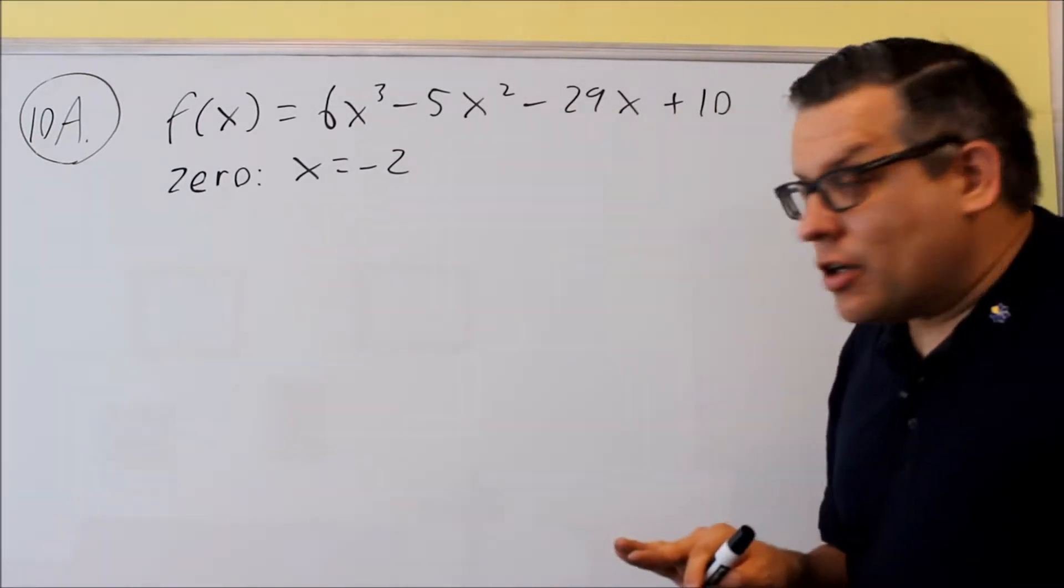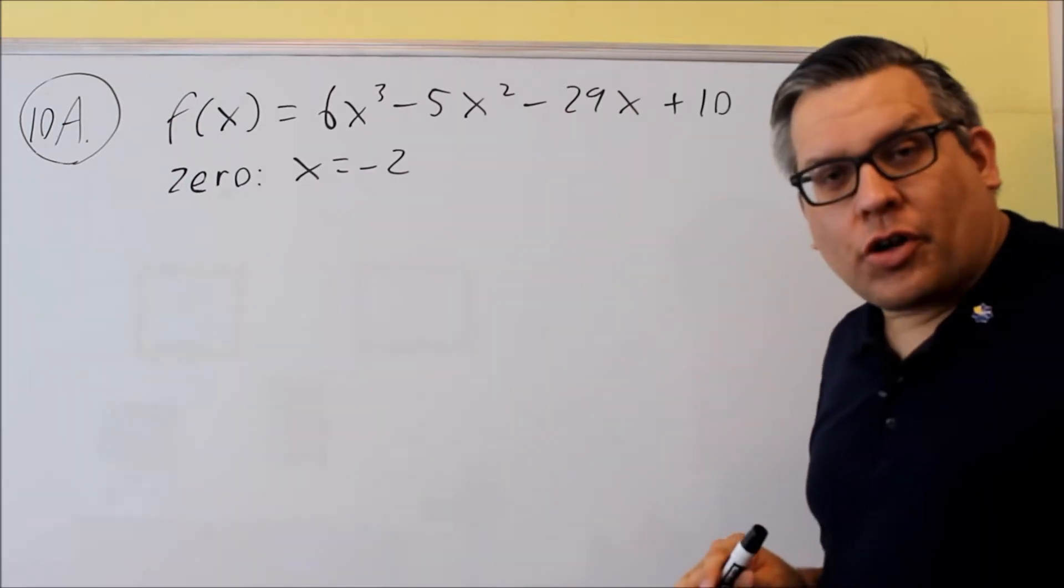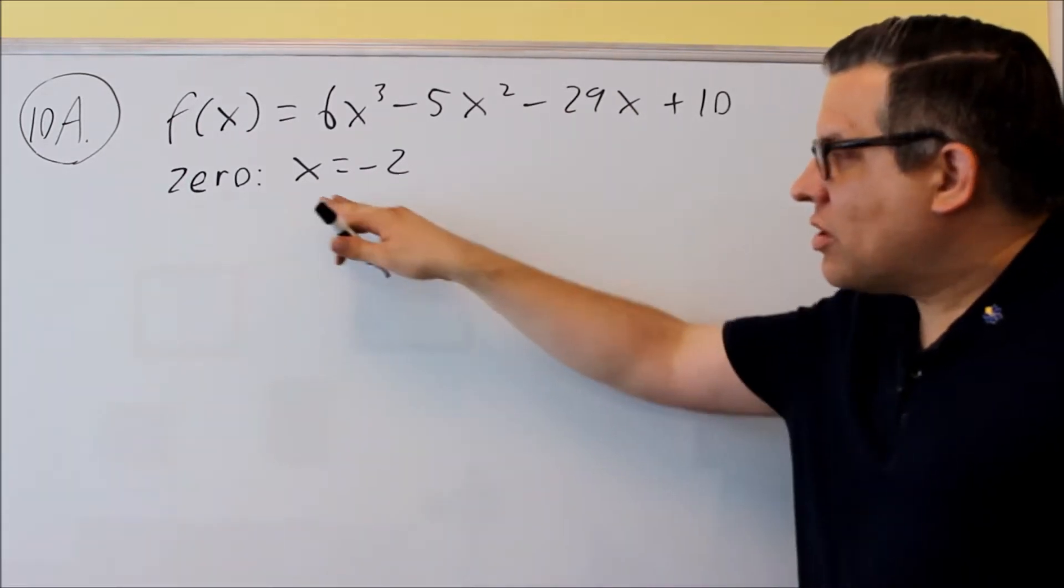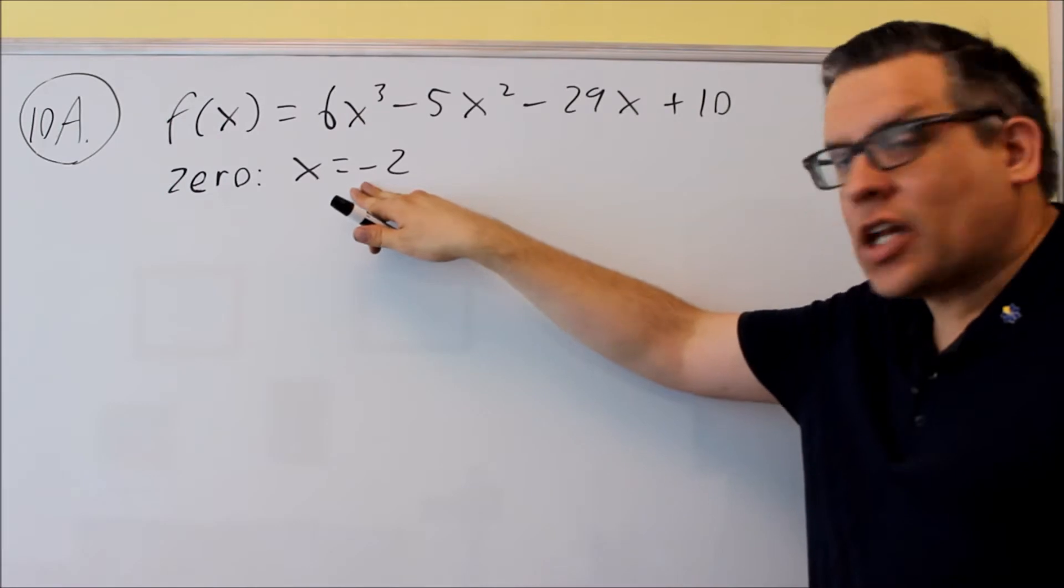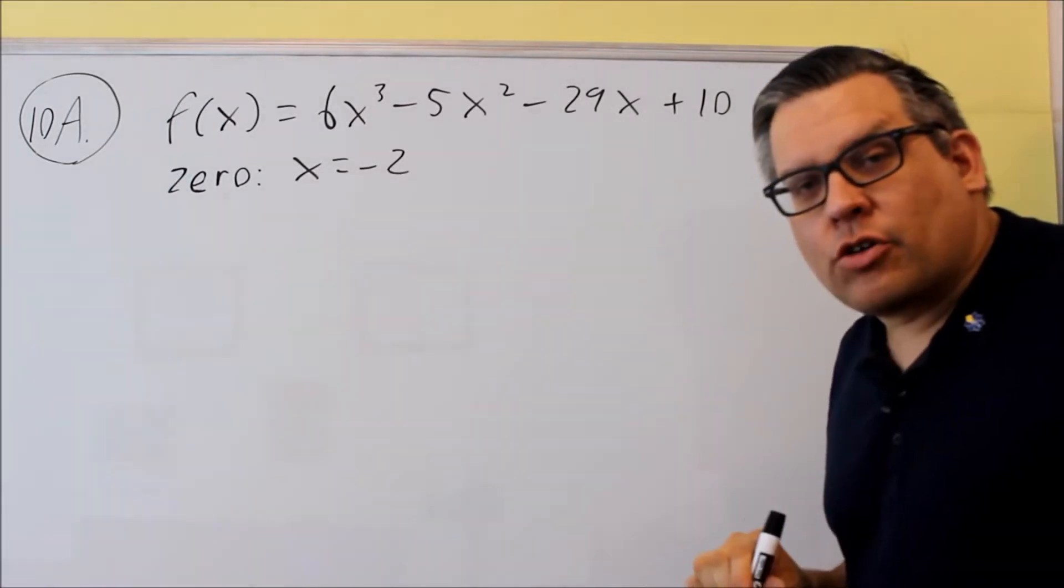Now you don't have to do any guess and check here on this. That zero they're going to give you, so I know that if I use synthetic division with negative 2, I should get a remainder of 0.